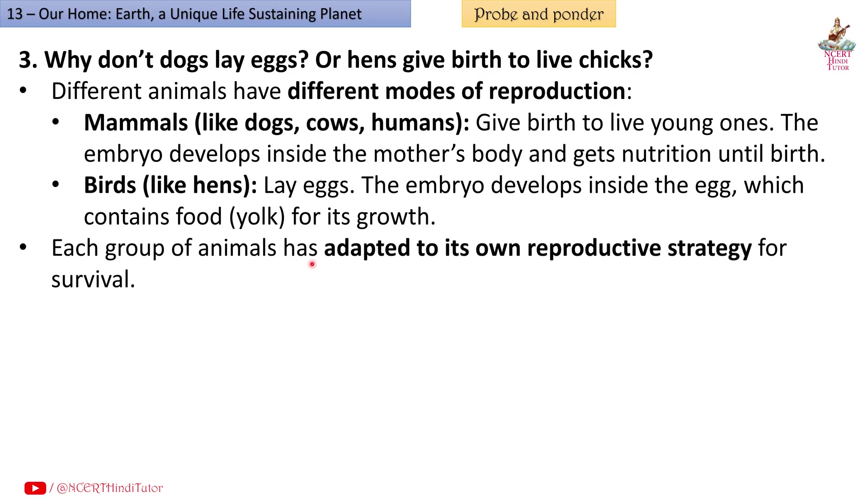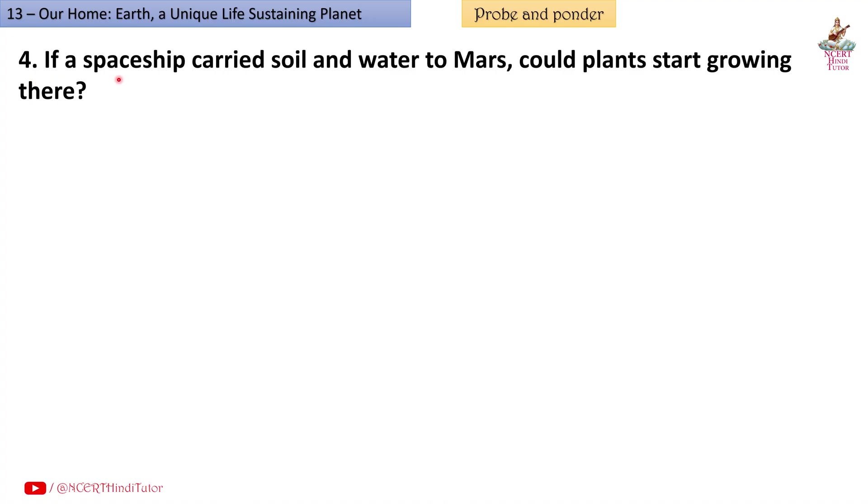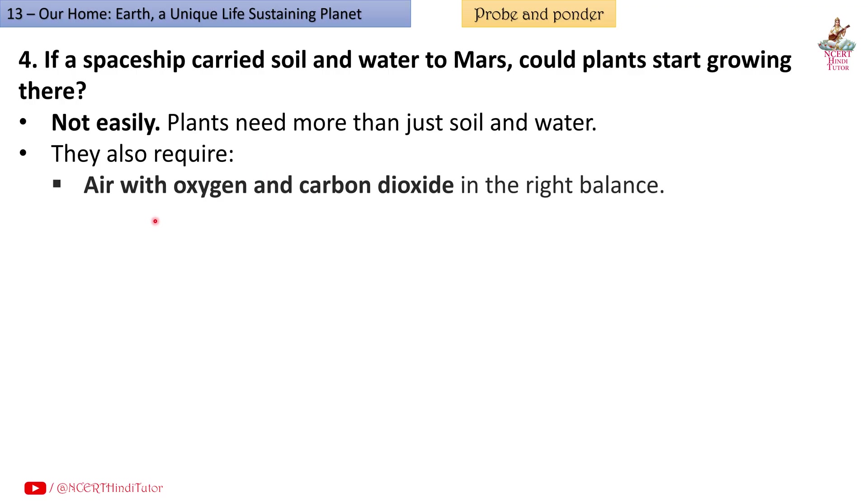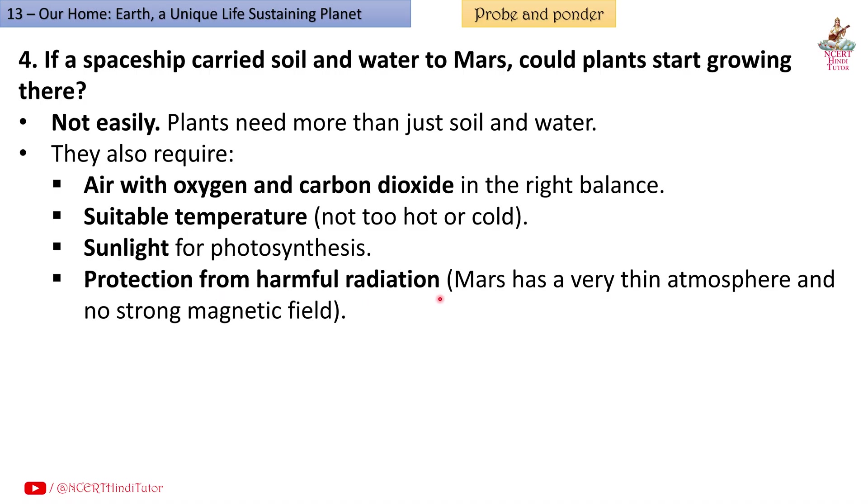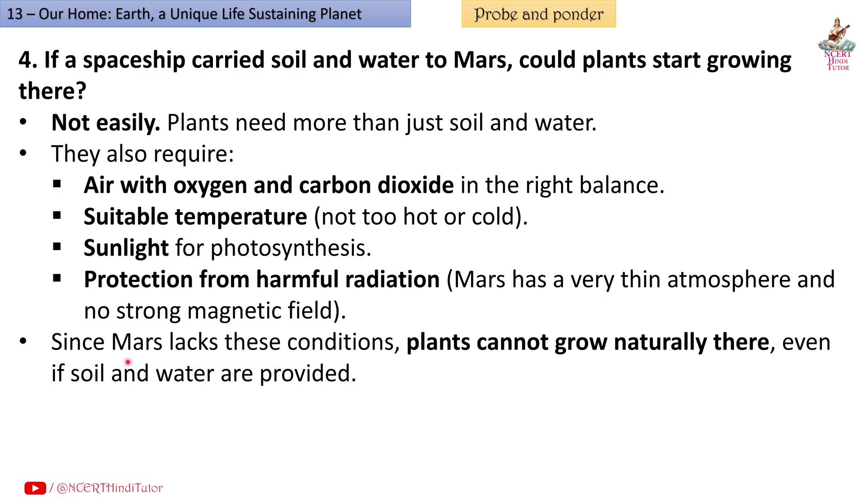Question 4: If a spaceship carried soil and water to Mars, could plants start growing there? Answer: Not easily. Plants need more than just soil and water. They also require air with oxygen and carbon dioxide in the right balance, suitable temperature - not too hot or cold - sunlight for photosynthesis, and protection from harmful radiations. Mars has a very thin atmosphere and no strong magnetic field. Since Mars lacks these conditions, plants cannot grow naturally there even if soil and water are provided.